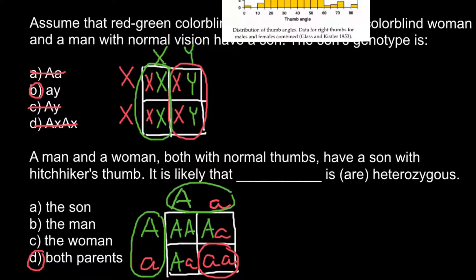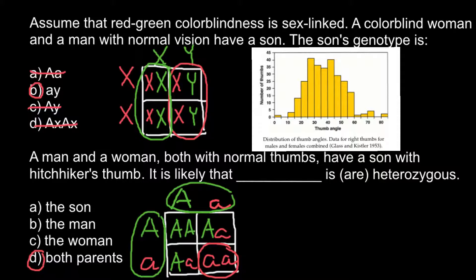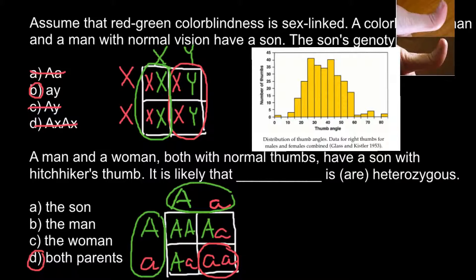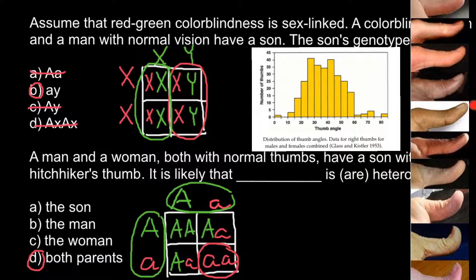Here is another picture showing that the distribution of this trait is centered in the middle. Extreme variants are very rare — thumbs that are very straight or very bent. Most people belong to the intermediate group, with angles between 30% and 50 degrees, meaning most people have an intermediate thumb angle. Such examples as hitchhiker's thumb used in textbooks do not reflect the real-life situation.